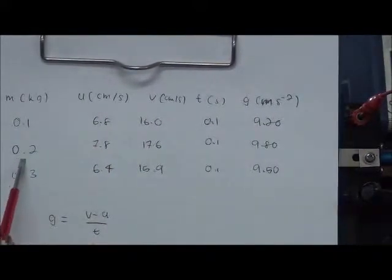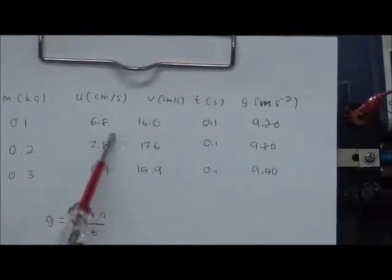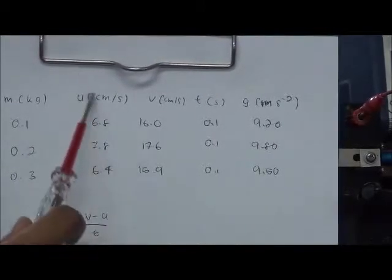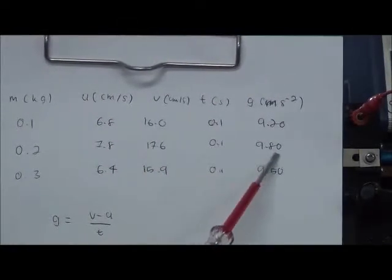By 0.2 kilogram, we got 7.8 centimeter per second for the initial and 17.6 for the final, and we got 9.8 meter per second for the gravitational force.